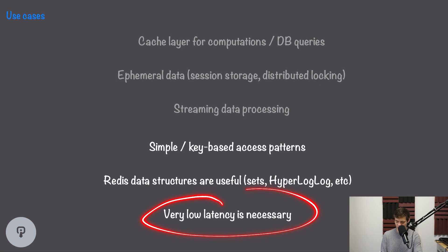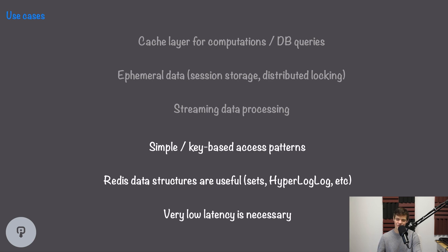Any situation where very low latency is important may be worth using Redis as a primary database. Redis is hundreds of times faster than a traditional database on average, and even on a standard network it can be as fast as 100 microseconds to query. For really latency-sensitive applications such as real-time scoring or trading systems, Redis may be necessary because speed is critical. It's also worth noting that a single Redis node is single-threaded, so it handles concurrency problems really nicely, which can also be helpful for certain use cases.